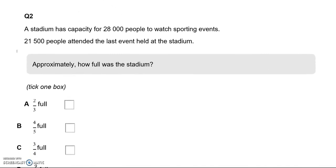A stadium has capacity for 28,000 people to watch sporting events. 21,500 people attended the last event held at the stadium. Approximately, how full was the stadium? Now, 21,500 out of 28,000.